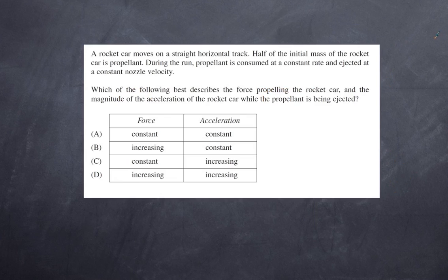Next question: a rocket car moves on a straight horizontal track. Half of the initial mass of the rocket car is propellant. During the run, the propellant is consumed at a constant rate and ejected at a constant nozzle velocity. Which of the following best describes the force propelling the rocket car and the magnitude of the acceleration while the propellant is being ejected?